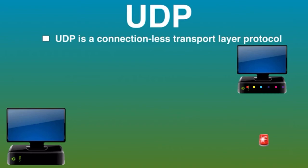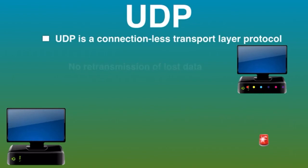UDP is useful in situations where the reliability mechanisms of TCP are not necessary. Retransmission of lost data packets is not possible with UDP. UDP speeds up communications by not formally establishing a connection before data is transferred, which allows data to be transferred very quickly.